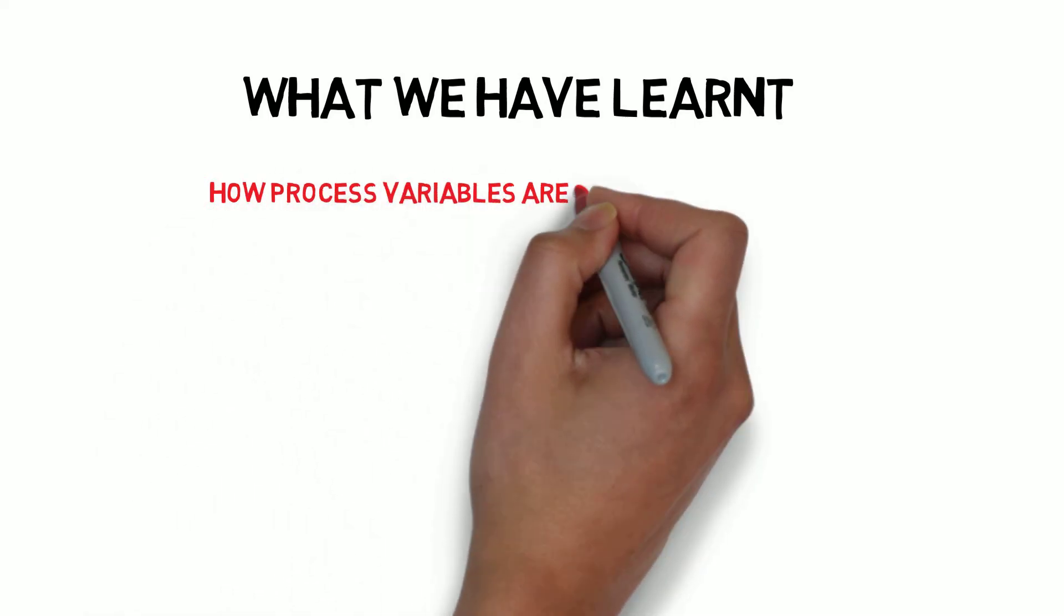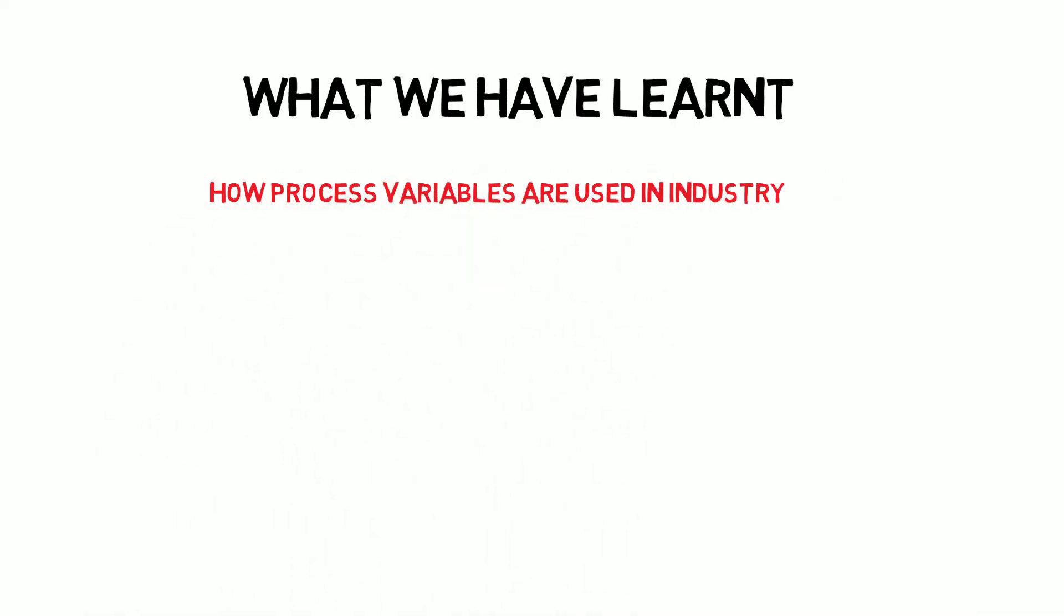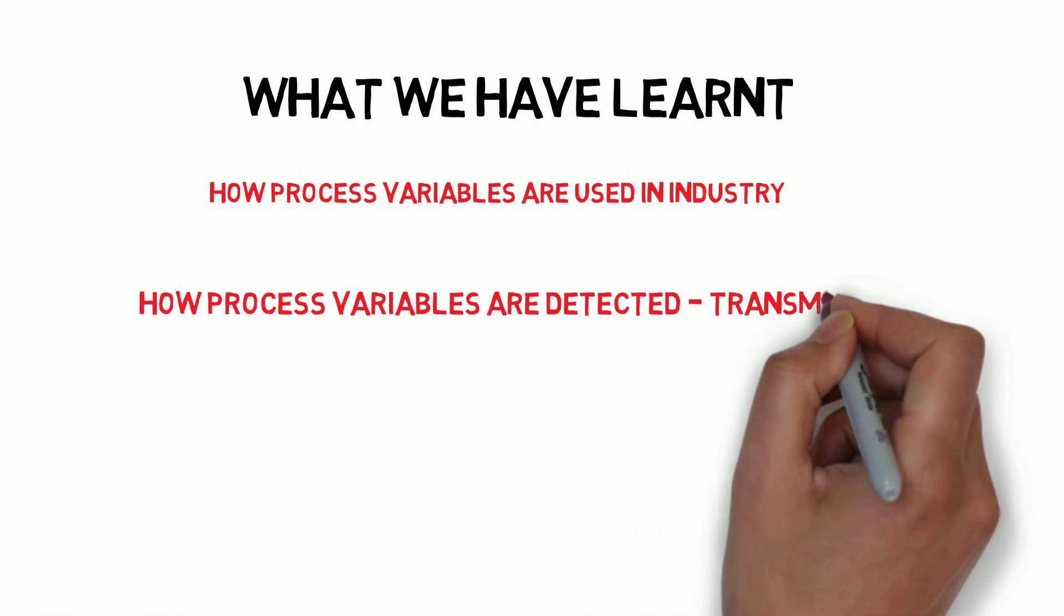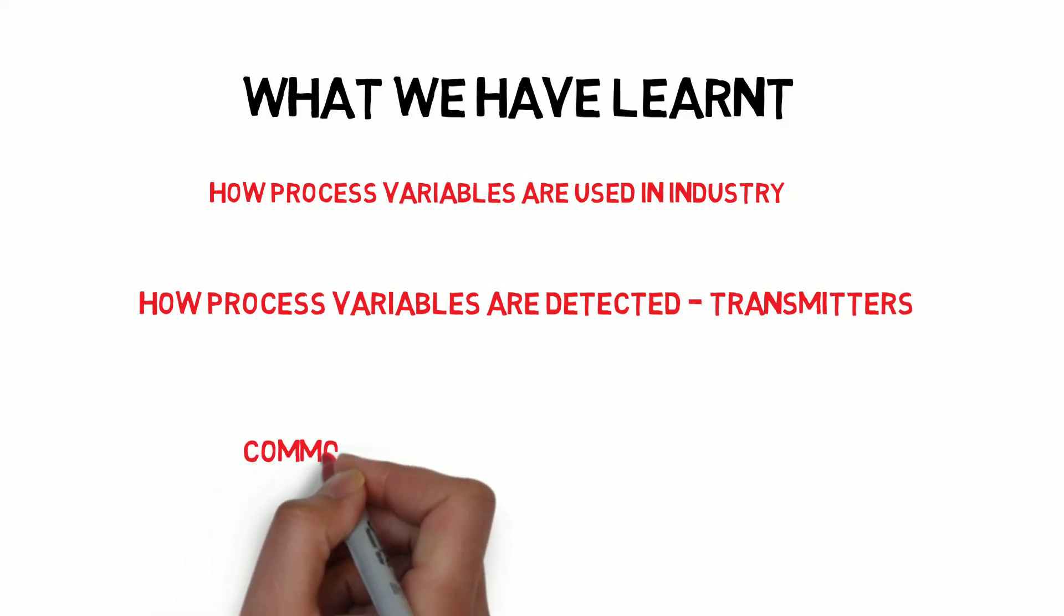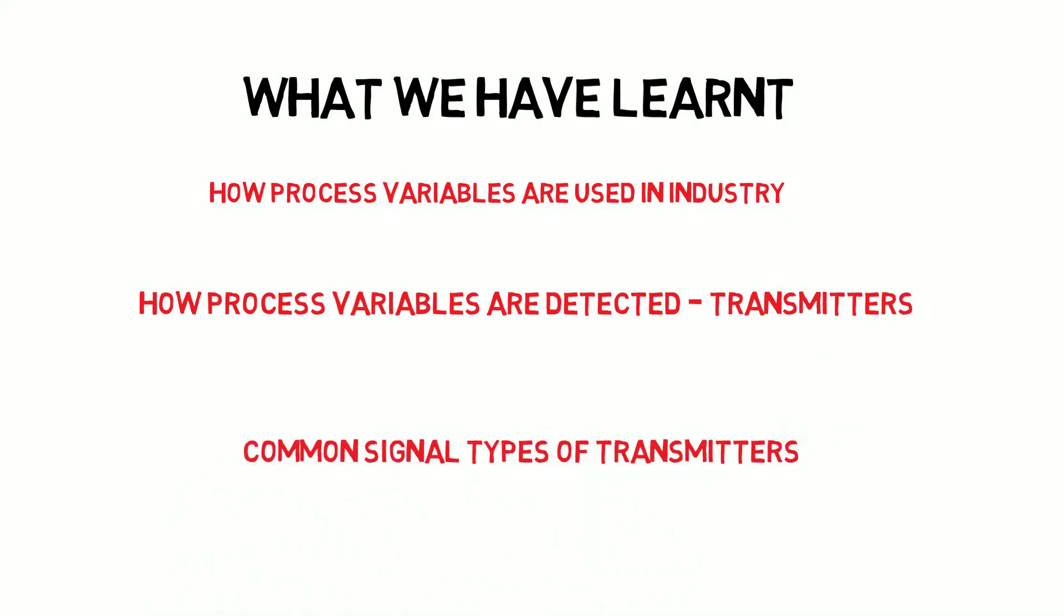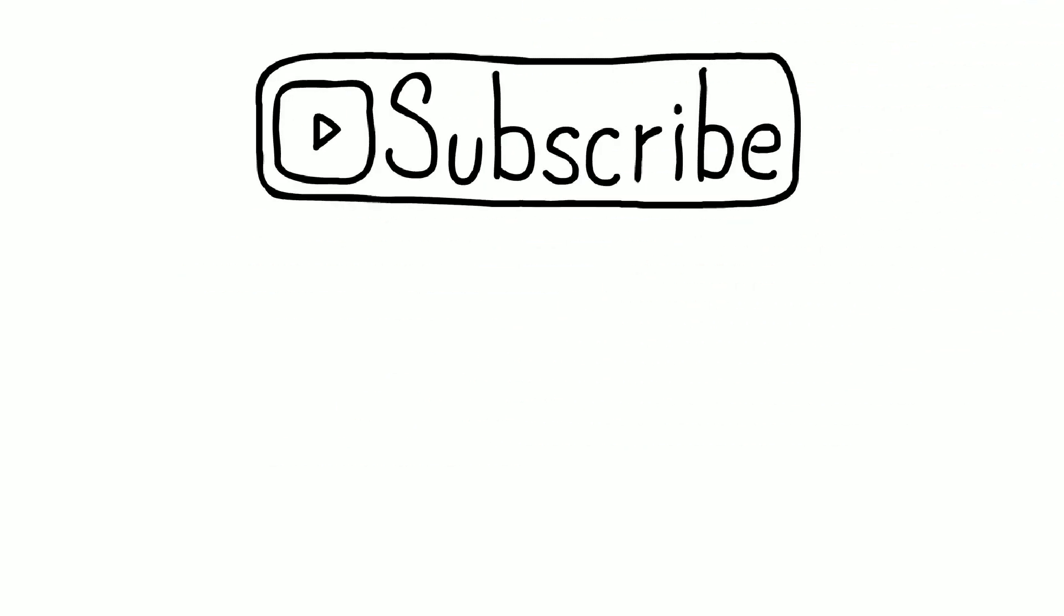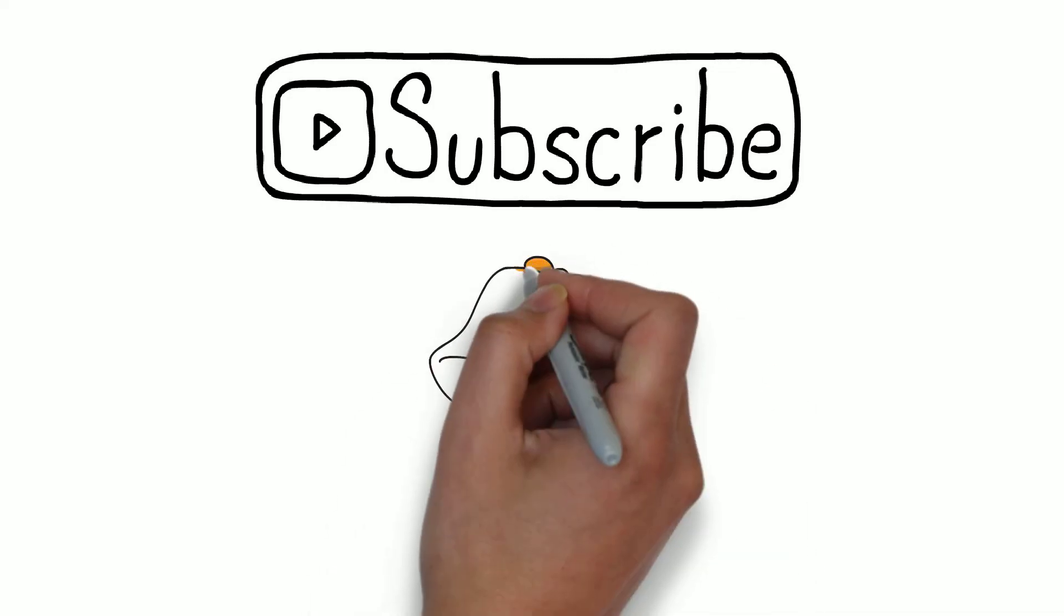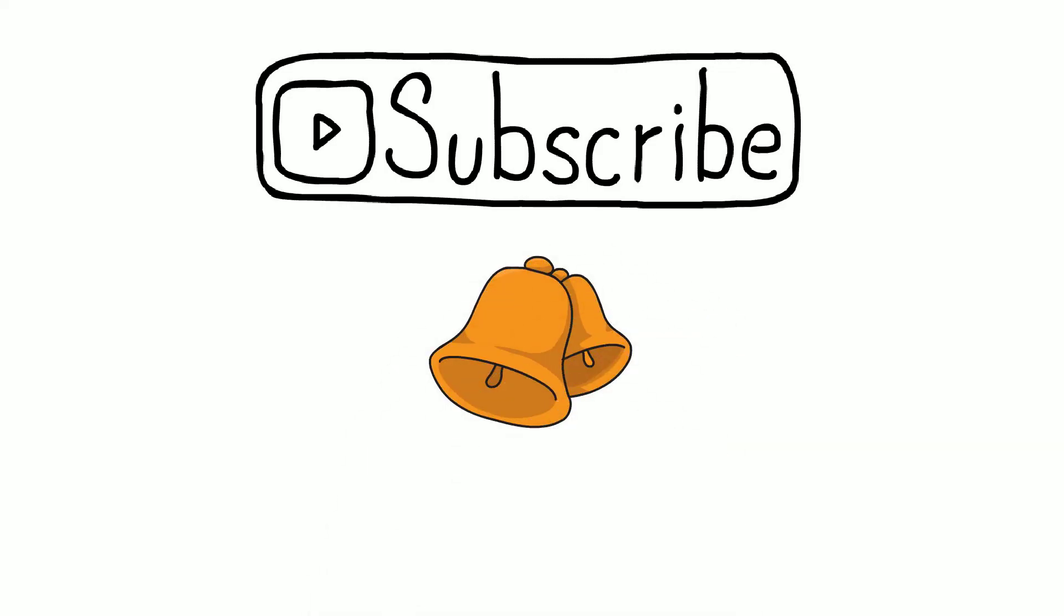So we now have a basic understanding of what transmitters do and the role they play in control systems. In future videos we are going to look at specific transmitter types and talk about the principles of their operation. If you would like to see these videos and more on instrumentation then please subscribe and hit the bell icon for notifications of new videos. Thank you and see you next time.